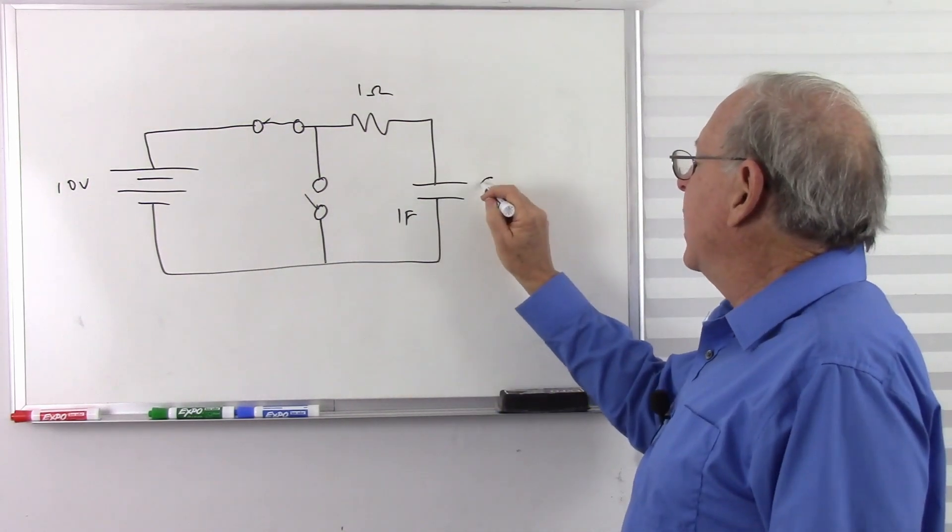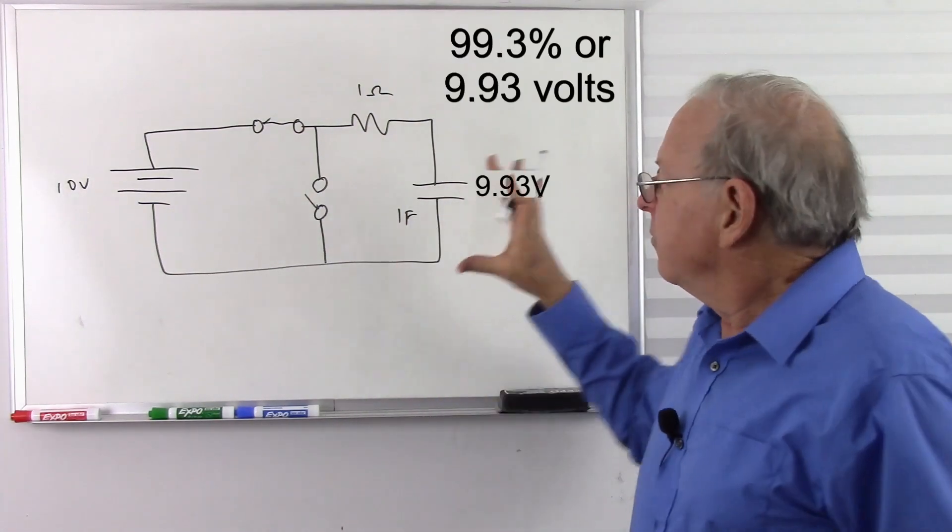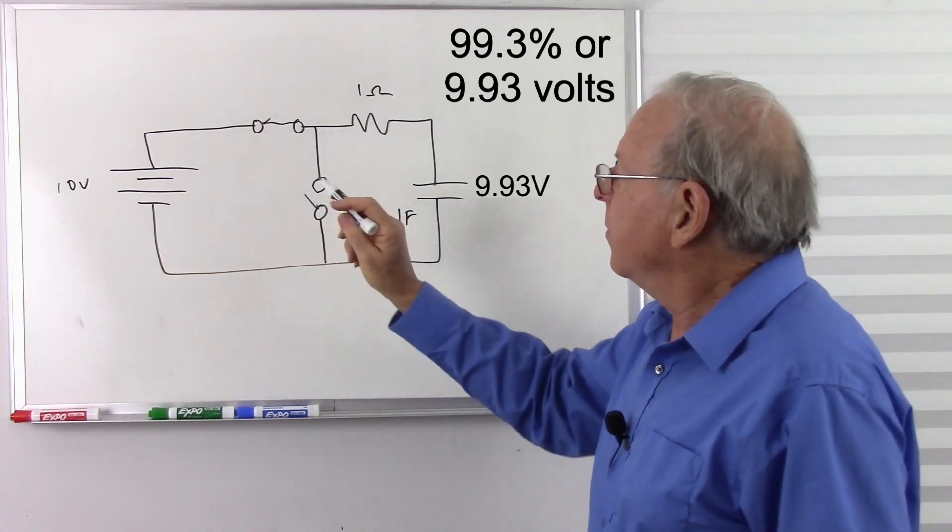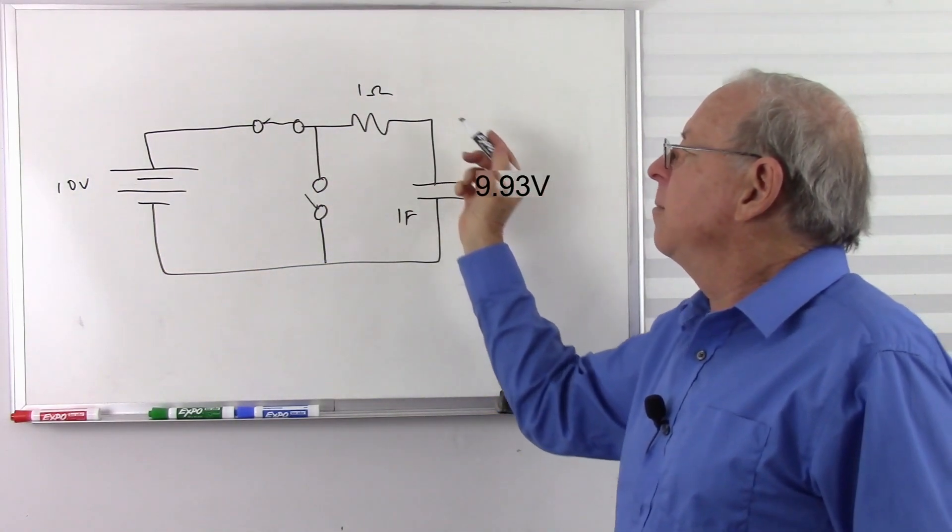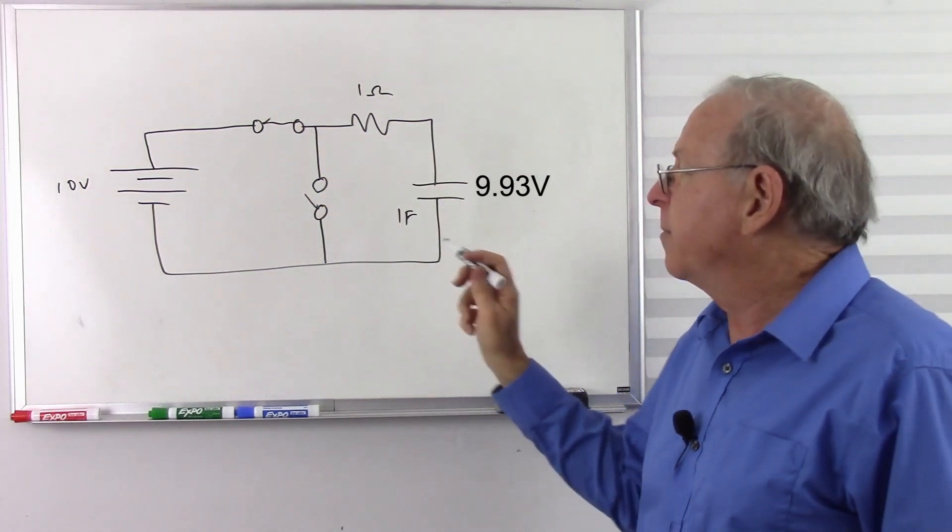Until after 5 seconds, we've reached 99.3% volts, and it's essentially pretty much the same as that voltage. So we're pushing current in, but it's pushing back with almost the same voltage, so almost no current is going into the capacitor at this point.